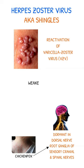Shingles commonly occurs when a person's immune system is weakened, and the risk of developing this condition increases with age.